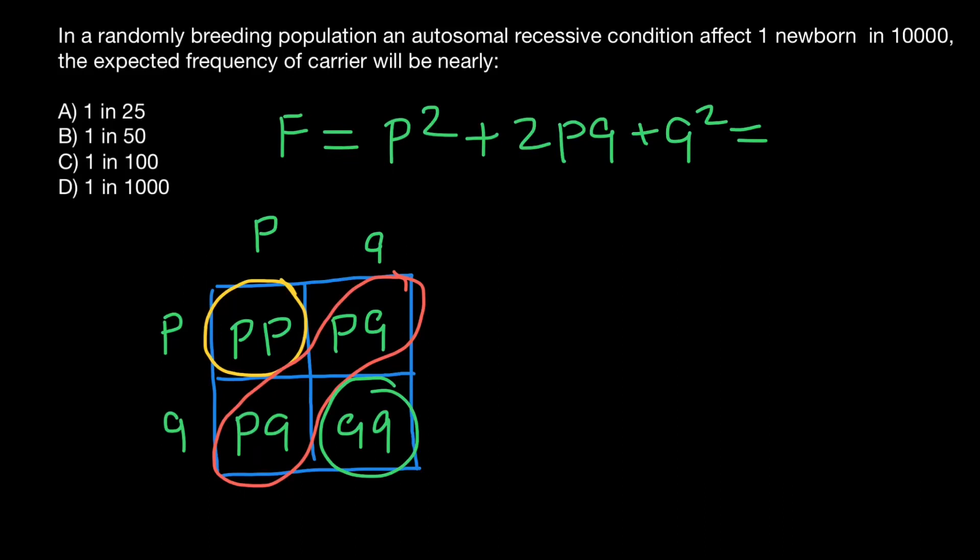And all this would equal to one or 100%. So these three genotypes represent their frequencies, and if we combine them, they would represent 100% of all genotypes and frequencies in a population. Now let's return to our problem.